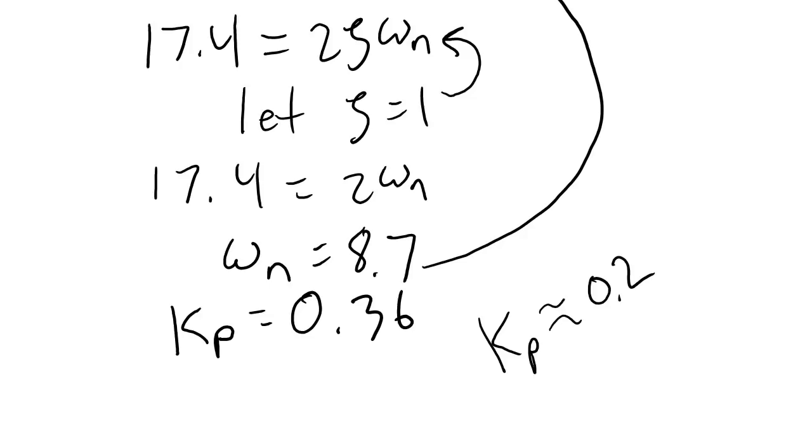Now note the effects that these two assumptions had on our calculated versus experimental Kp value. The Kp value that we calculated is higher than the Kp value we determined experimentally. These two assumptions often have the effect of making the control behavior seem better than it actually is. Our calculated value suggests that we should be able to take Kp all the way up to 0.36 before we have overshoot. But experimentally we found we could only take Kp up to about 0.2 or even less than that before we had overshoot.